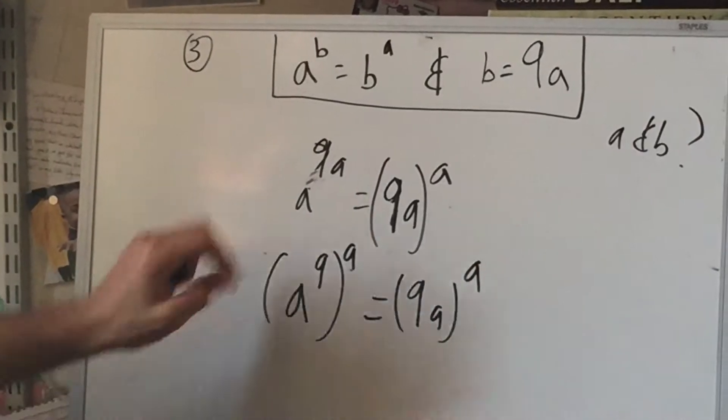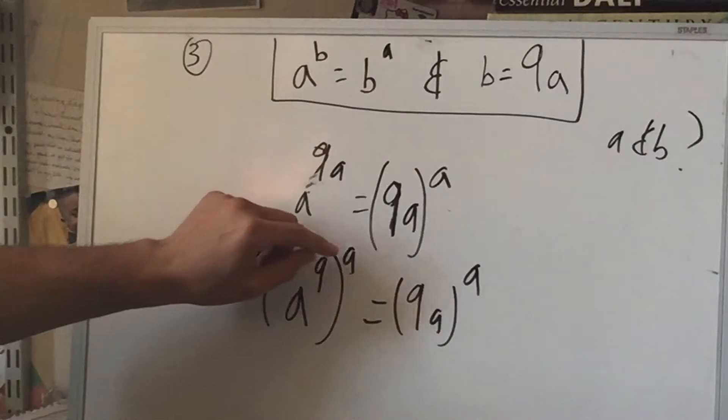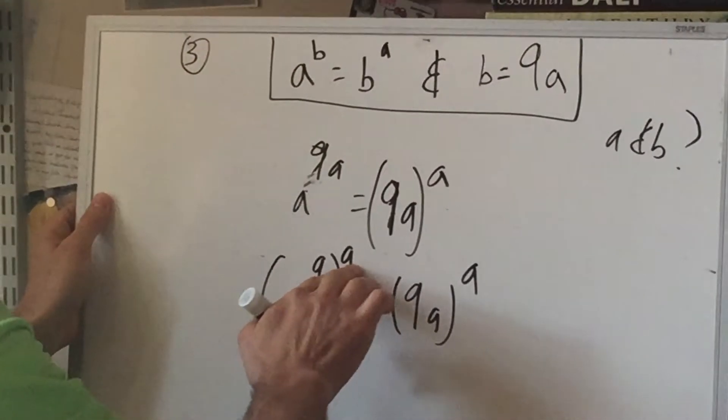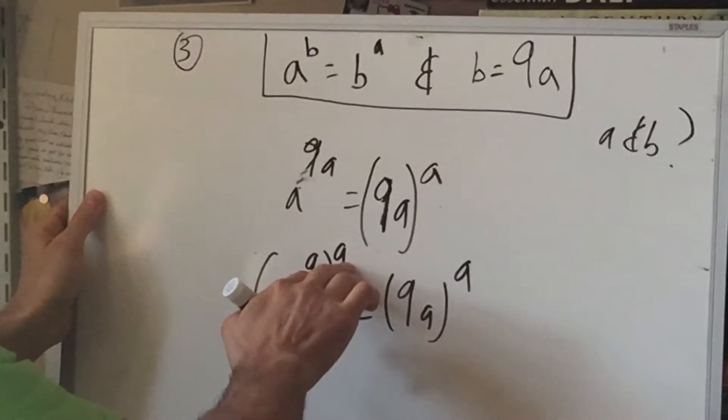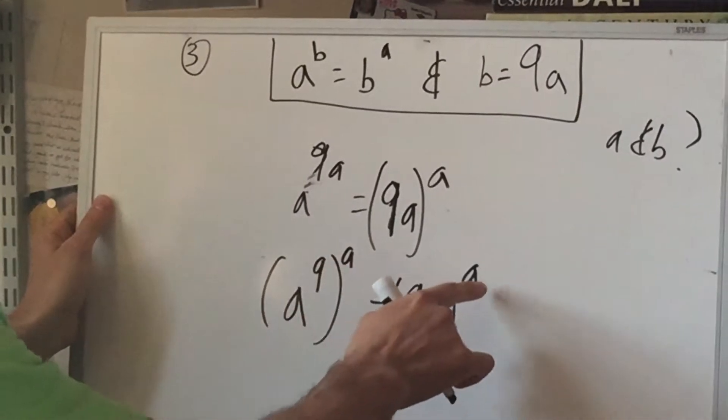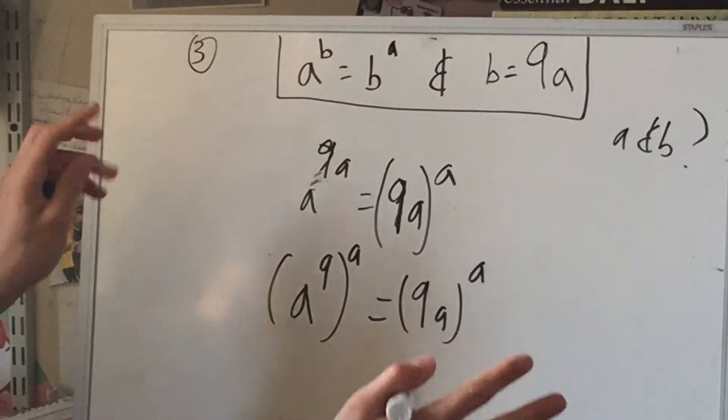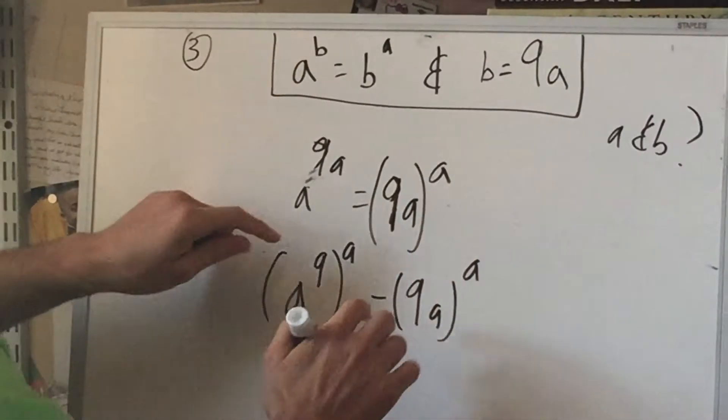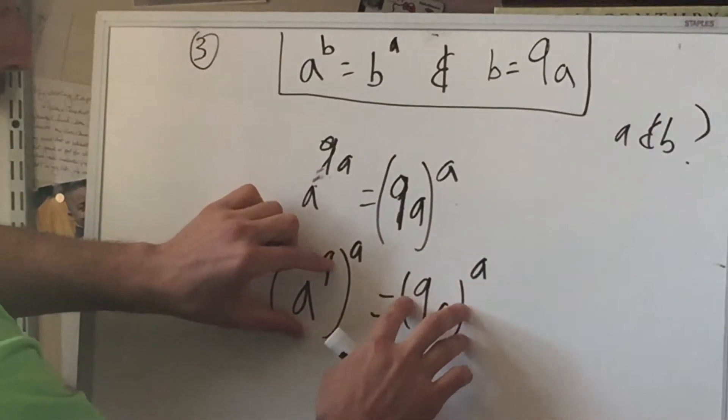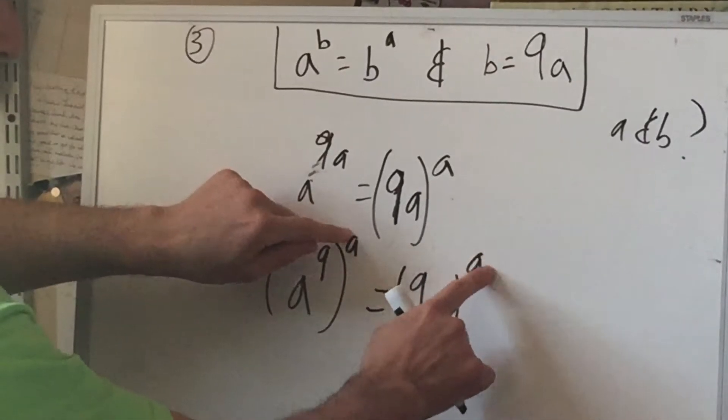And now notice we have some number to the 8th power. Not A as in the number 8, but A as in the letter. So the A power, A power. Now the A's and 9s sort of look alike, so bear with me. These must be the same numbers because they're both raised to the same power.